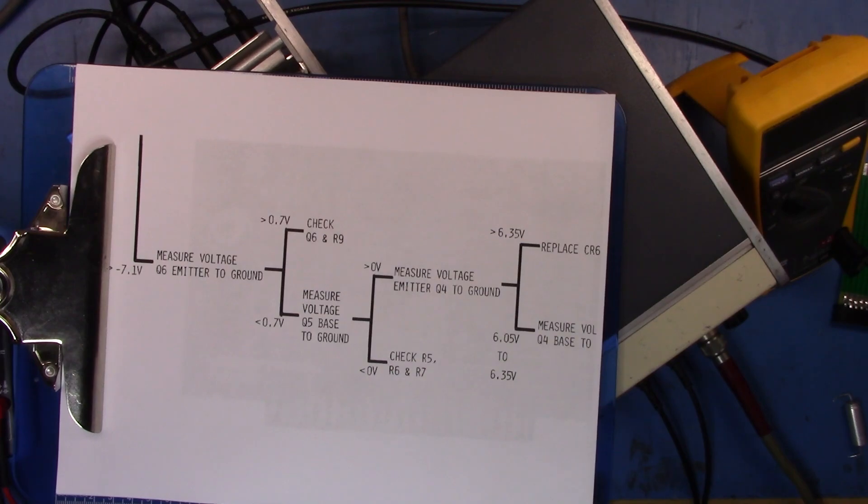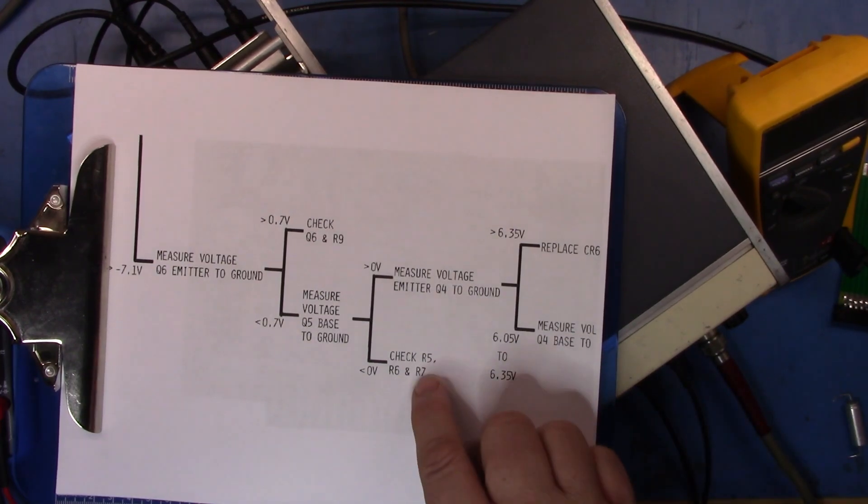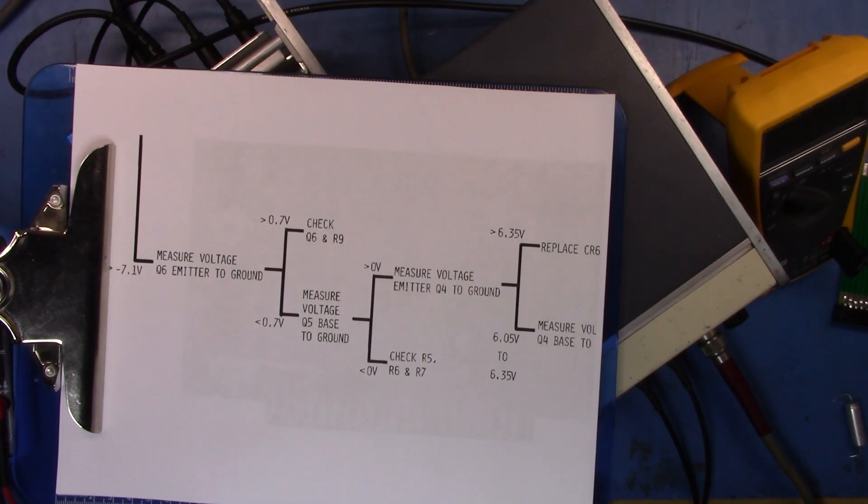Now I could take Q4 out and check it, and I think Q4 is just a fairly standard small signal transistor, but I thought well I would expect the rails to be much worse if I didn't have Q4 working. And on the other side it says check R5, R6 and R7. Well I hadn't noticed where those were in the schematic so let's take a look at that.